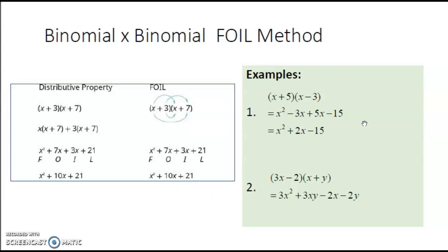Here are some examples of multiplying binomials using the FOIL method. First example: x plus 5 times x minus 3. First: x times x is x squared. Outer: x times negative 3 is negative 3x. Inner: 5 times x is 5x. Last: 5 times negative 3 is negative 15. Combining like terms gives x squared plus 2x minus 15. Second example: 3x minus 2 times x plus y. First: 3x times x is 3x squared. Outer: 3x times y is 3xy. Inner: negative 2 times x is negative 2x. Last: negative 2 times y is negative 2y. In this case there are no like terms to combine.